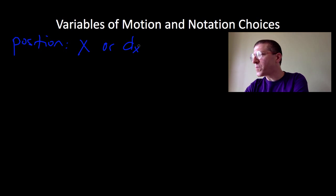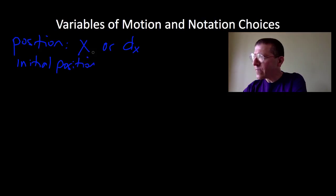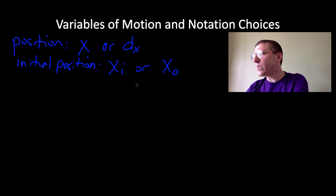If you want to get more specific, we can look at initial position. You would indicate initial position a couple different ways: either X initial or X naught, meaning the position at time equals zero. I'm going to prefer X naught simply because that is the format that the AP Physics exam uses.